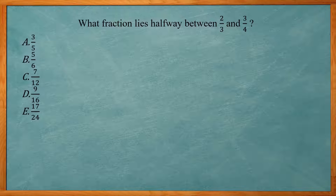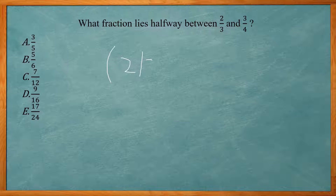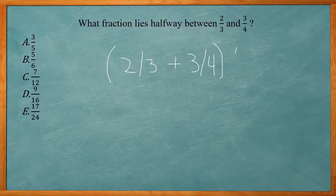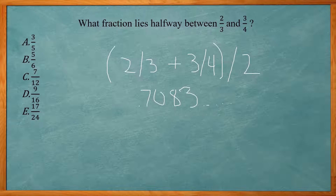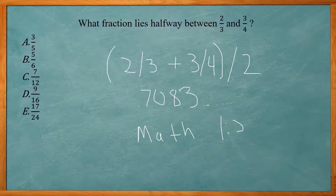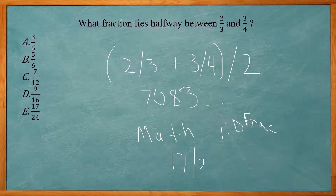This one says, what fraction lies halfway between 2/3 and 3/4? Halfway means you add these together and divide by 2. So I type open parentheses, 2 divided by 3, plus 3 divided by 4, close parentheses, divided by 2. That gives a repeating decimal, so I go to Math, first choice for Frac, to convert it to a fraction — that gives me 17 over 24. Answer choice E.